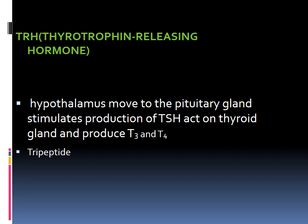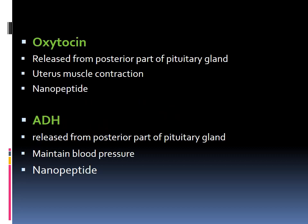The next important biologically active polypeptide is TRH, which is thyrotrophin-releasing hormone. It is released from the hypothalamus and it governs the pituitary gland to produce thyroid hormones T3 and T4. These perform different metabolic and growth functions in the body, so TRH is also a peptide involved in normal growth and metabolism.